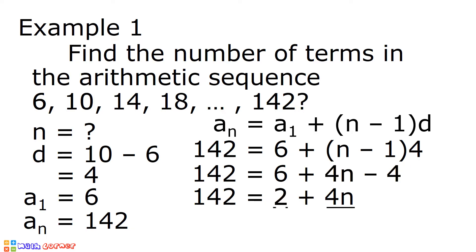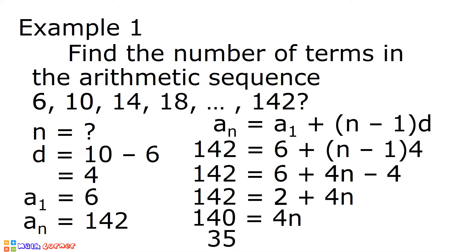To isolate 4n, we need to add negative 2 to both sides of the equation. 142 plus negative 2 is equal to 140. 2 plus negative 2 is equal to 0, plus 4n is equal to 4n. So we have 140 is equal to 4n. We have to divide both sides by 4. 140 divided by 4 is equal to 35. 4n divided by 4 is equal to n.